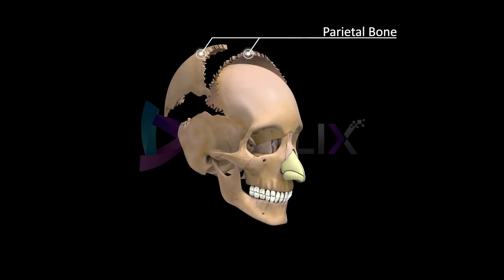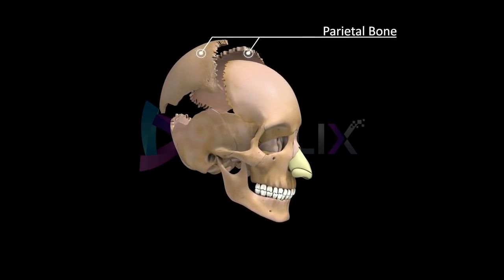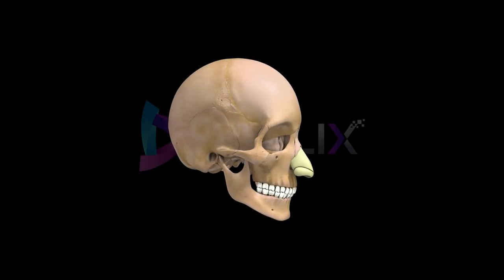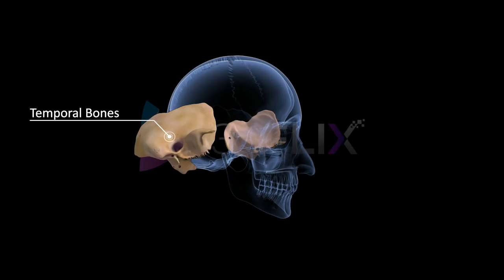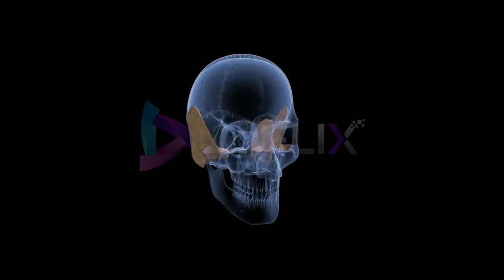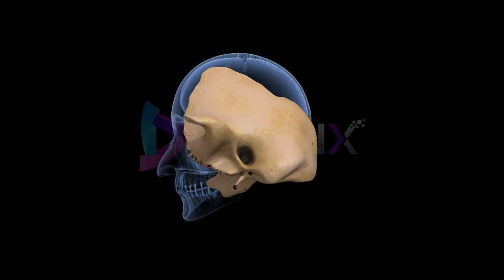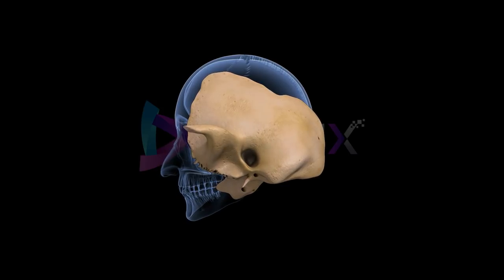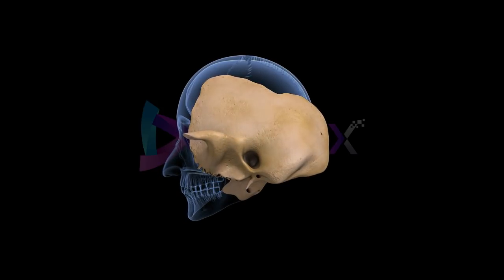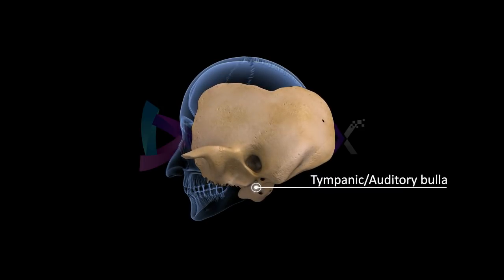Parietal bones: These form the major portion of the sides and roof of the cranial cavity. Temporal bones: These form the lateral parts and the floor of the cranial cavity. Each temporal bone bears the opening of the external auditory meatus, and lodges the middle ear components in the tympanic part, called the tympanic or auditory bulla.